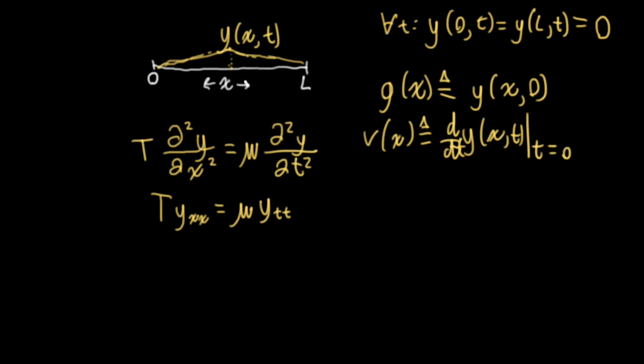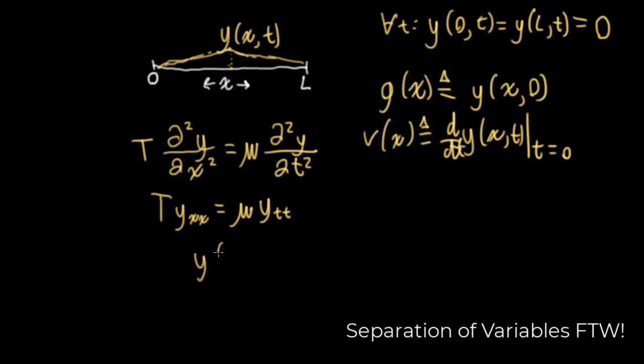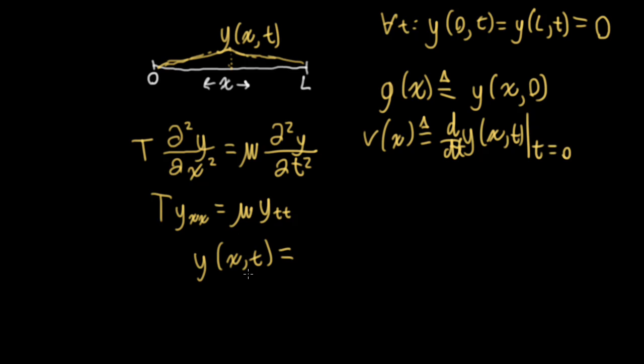I'm going to solve this using a trick called separation of variables. This doesn't always work, but it's really nice when it does. If you can use separation of variables, you can write your solution to the PDE as the product of two factors, each of which is a one-dimensional function: q, a one-dimensional function of time, and phi, a one-dimensional function of space.